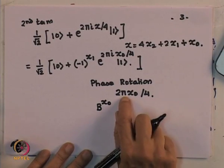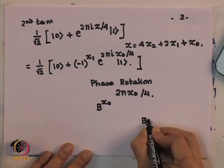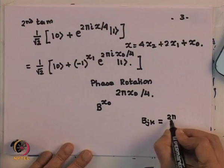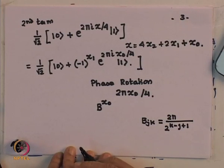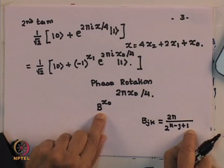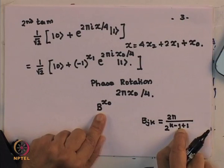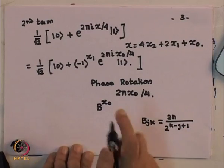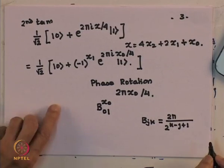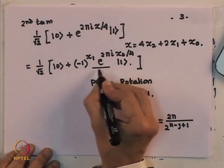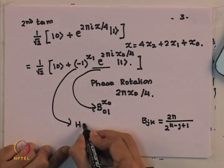I need to find how much this rotation is. I defined the controlled B_jk gate where the phase is given by 2π divided by 2^(k−j+1). I want this phase to be 2π/4, so taking j=0 and k=1 gives 2^(1+1) = 4, so this is a B_01 gate. This is the Hadamard applied together with that controlled gate, which leaves us with the third term.